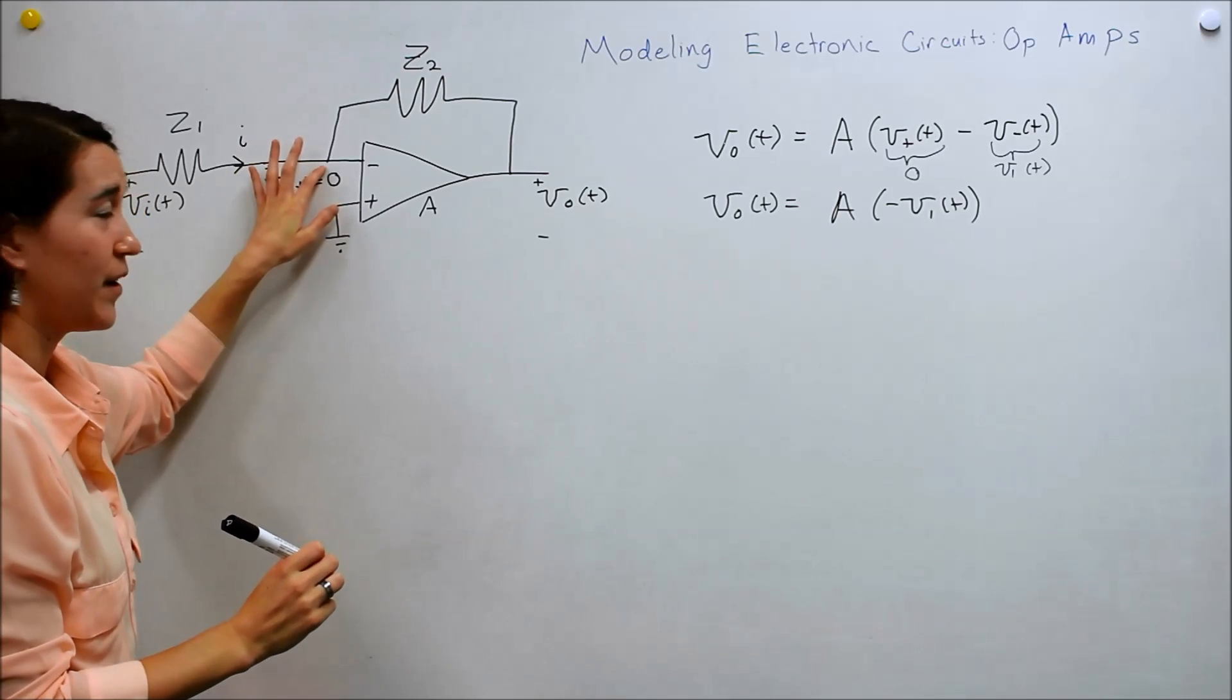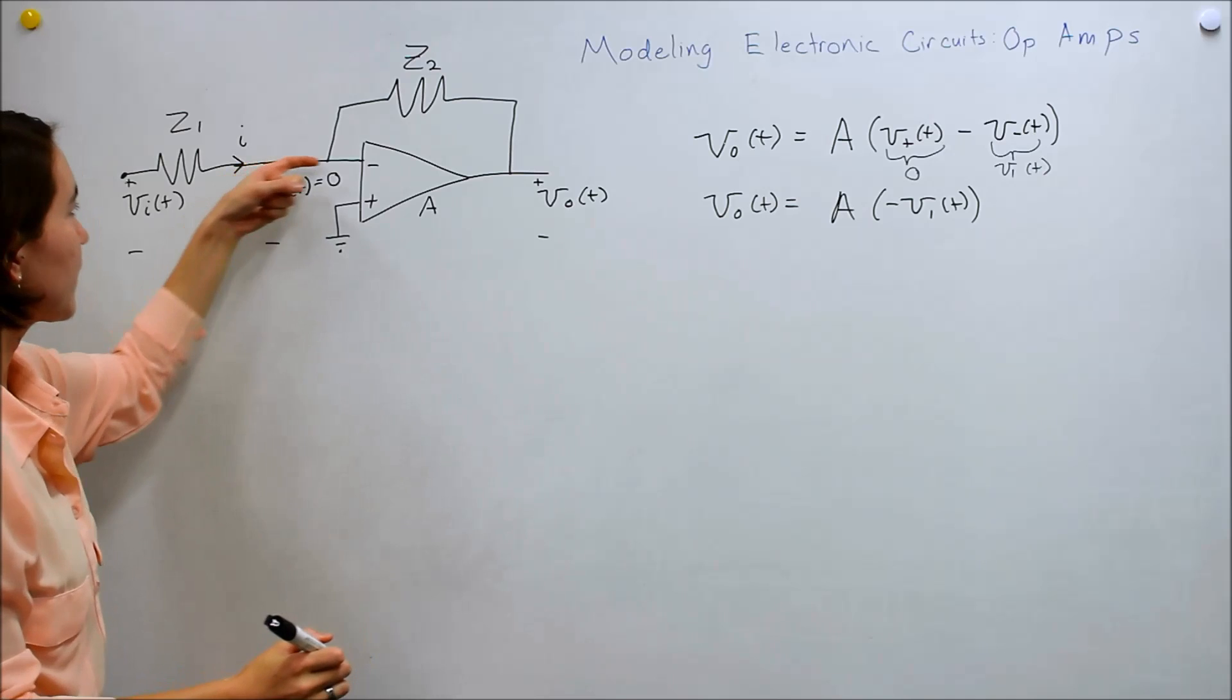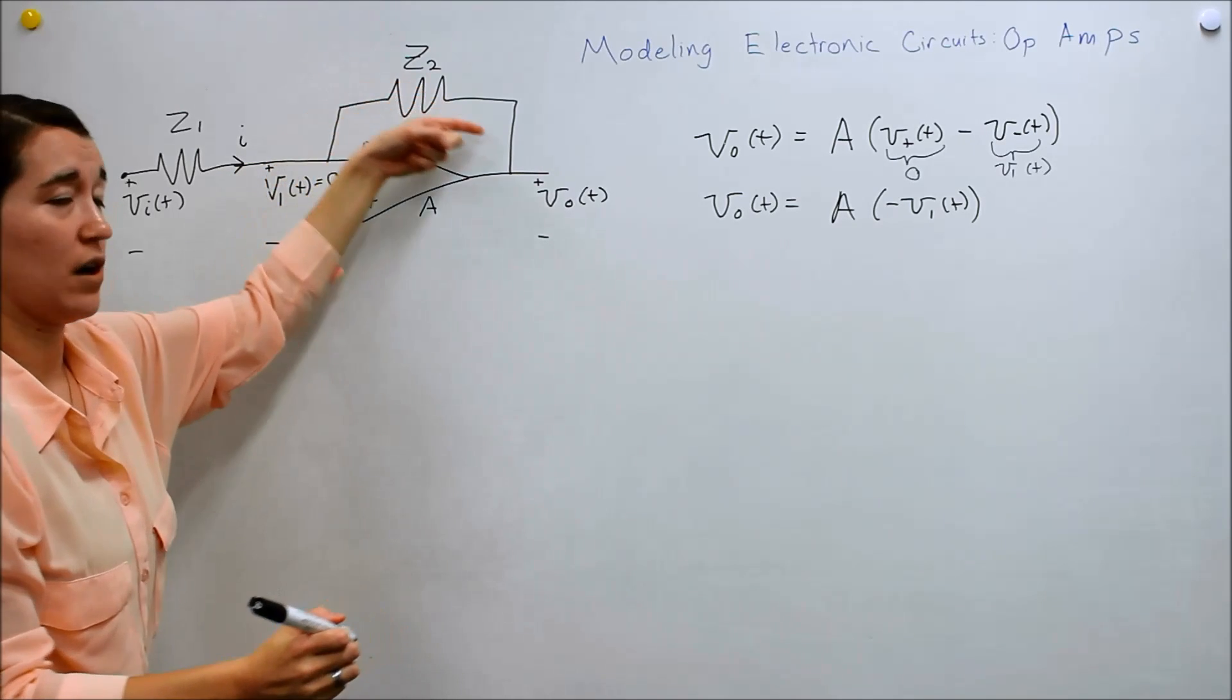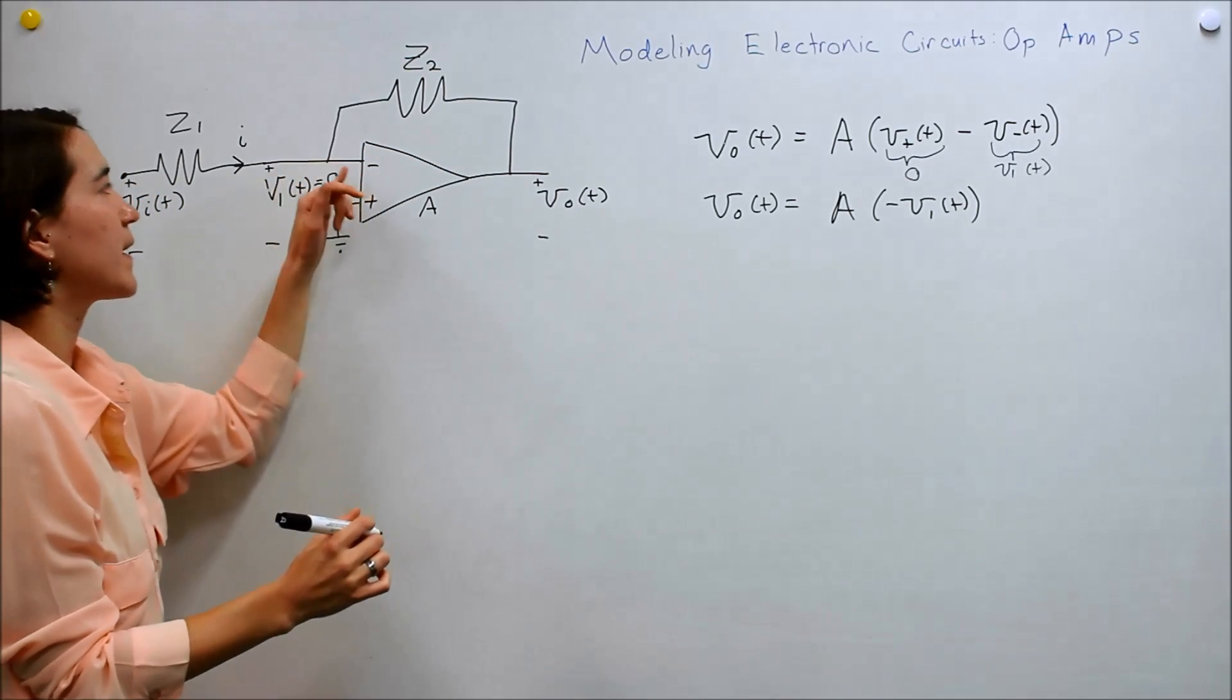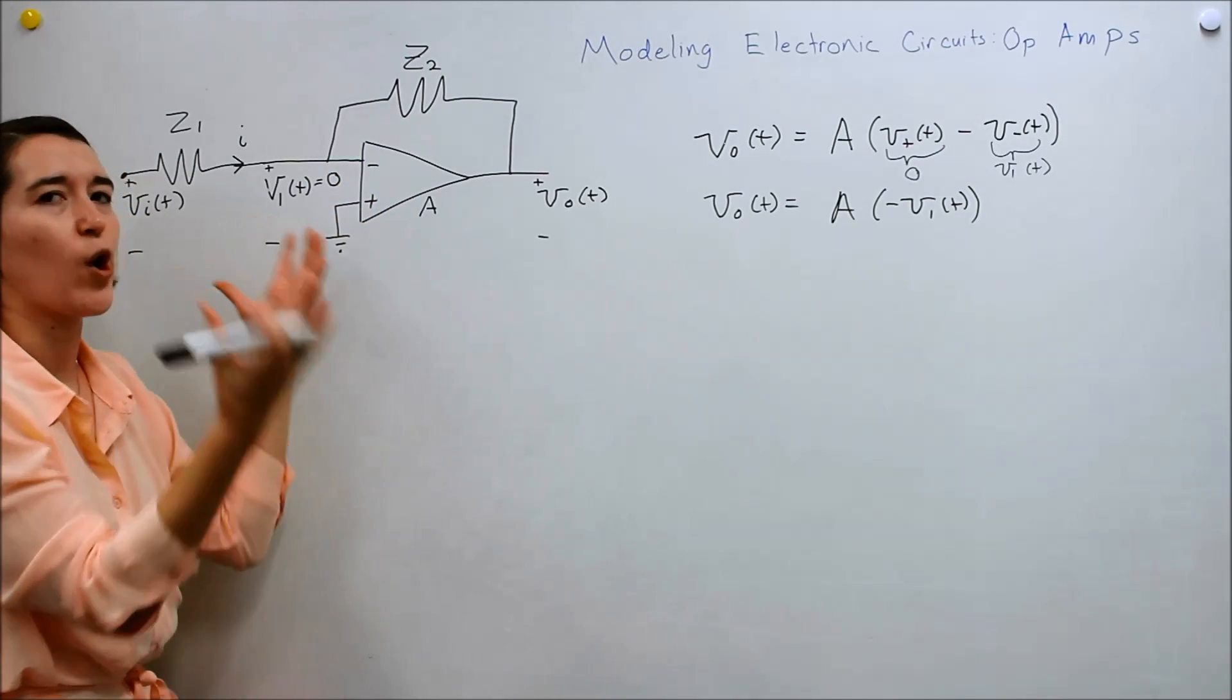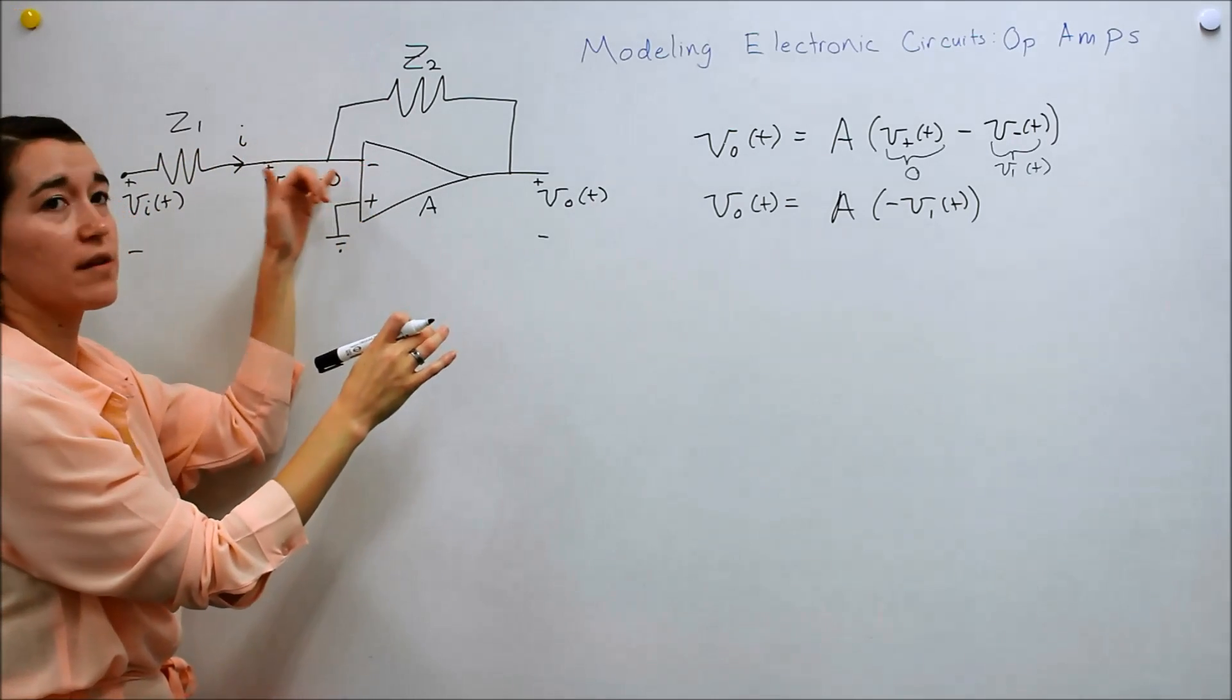And at this node, according to Kirchhoff's current law, the current going in here has to go into this op amp node and up through here. But the input impedance of the op amp is infinite. So it's like having an open circuit. So there's actually going to be no current going into this node,